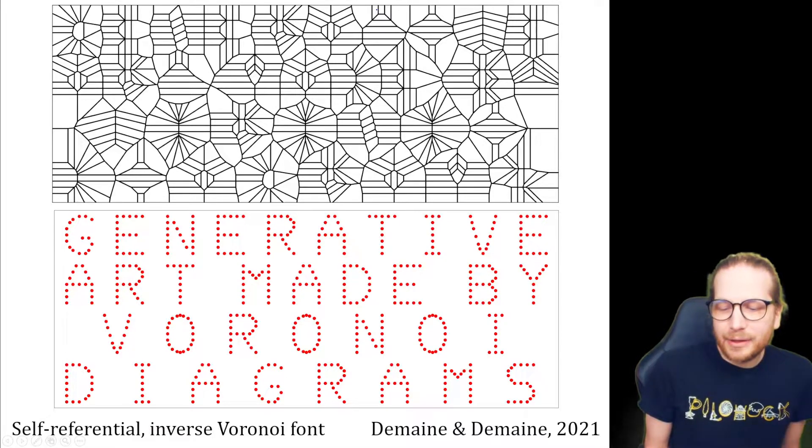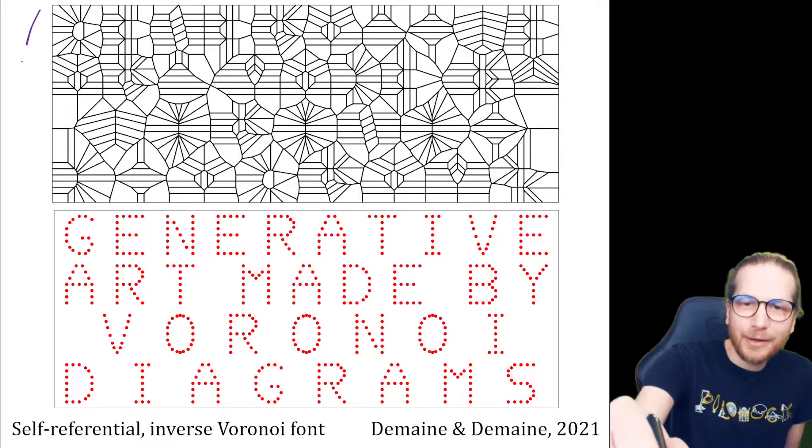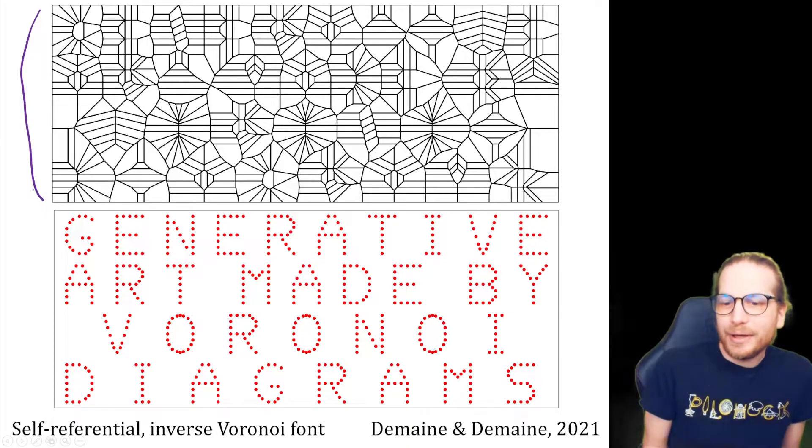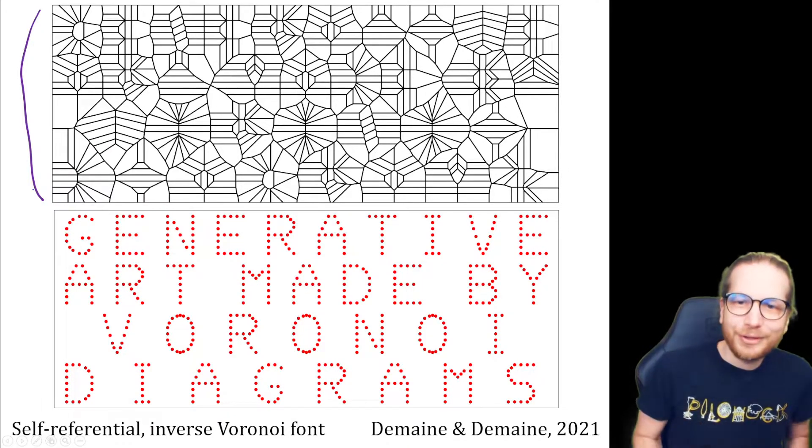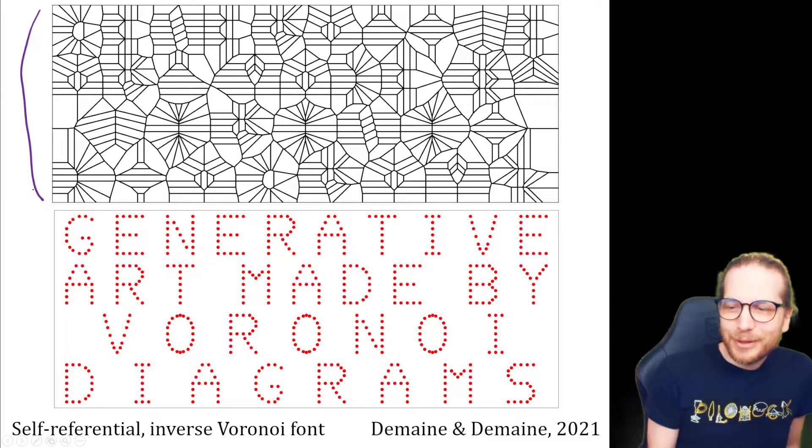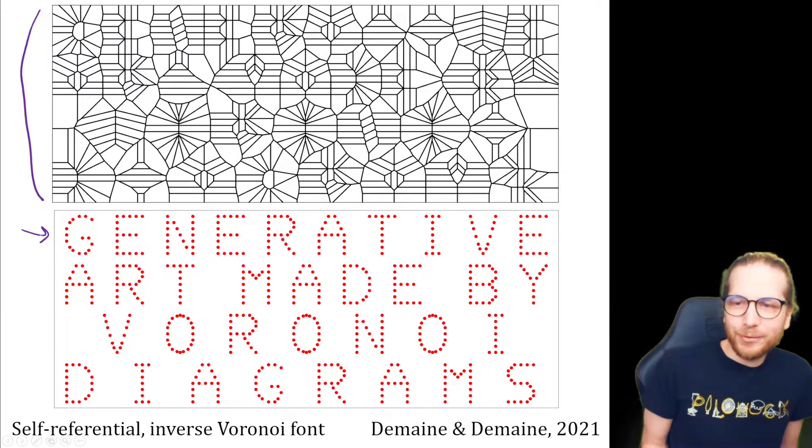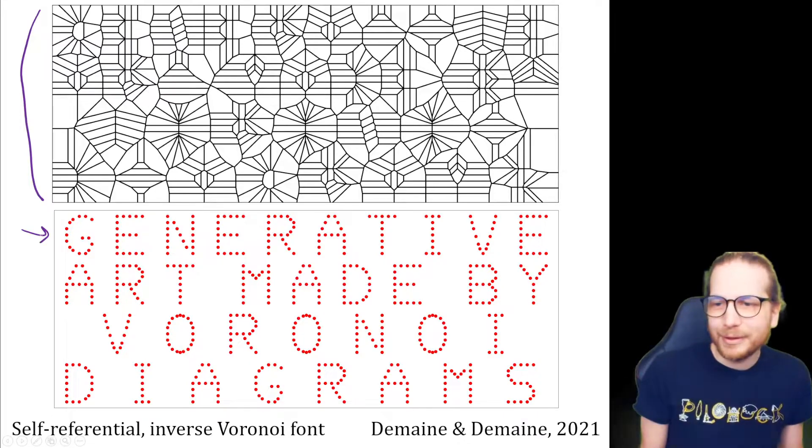Here is a kind of self-referential, so getting more interesting artwork here. So on the top we have an inverse Voronoi font, and it's hard to see the letters, but if you extract them, you get this pattern of dots at the bottom, generative art made by Voronoi diagrams, so describing itself.